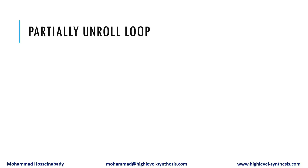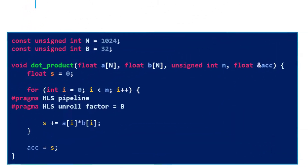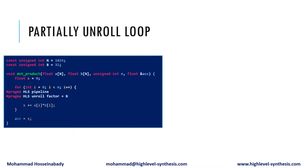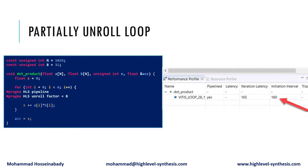To unroll b iterations of the loop, we can use the corresponding pragma provided by the Xilinx Vitis HLS toolset. After synthesizing the code, the report says the resulted initiation interval is 160. That means, because of the data dependencies, the HLS tool couldn't apply both parallelism and pipelining.